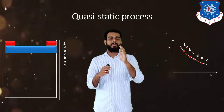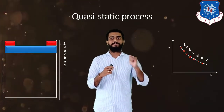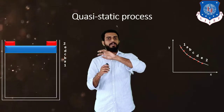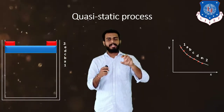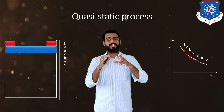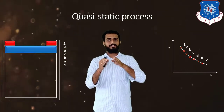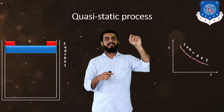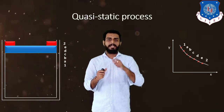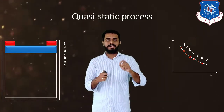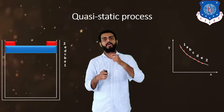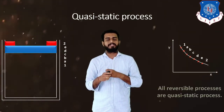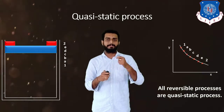A quasi-static process is also called a reversible process. Reversible means if you do the same thing in reverse direction — putting the weights back one by one — you can go from point 2 back through E, D, C, B, A, to point 1. The same procedure can be repeated in reverse. That is why it is called a reversible process. Remember: all reversible processes are quasi-static processes.